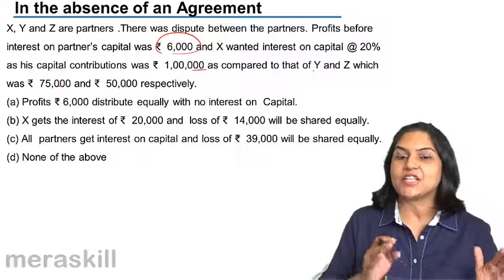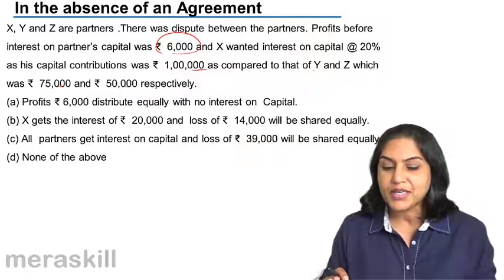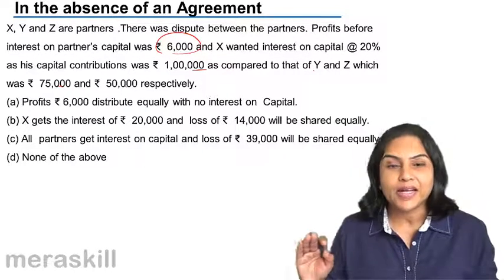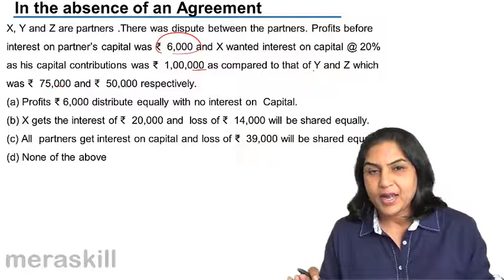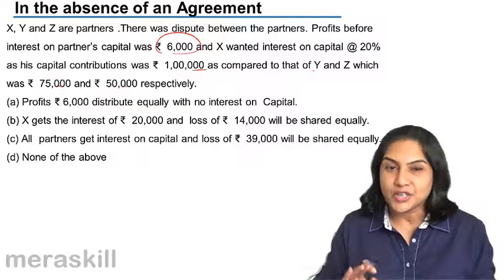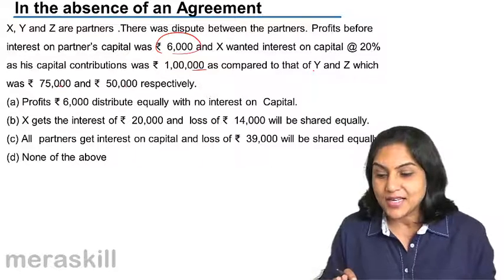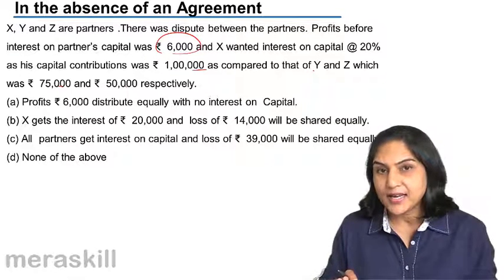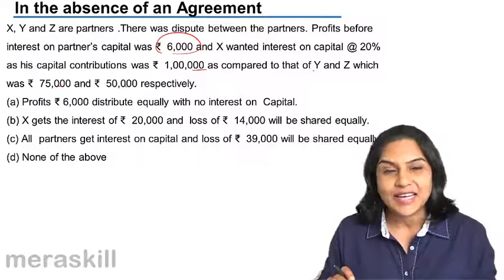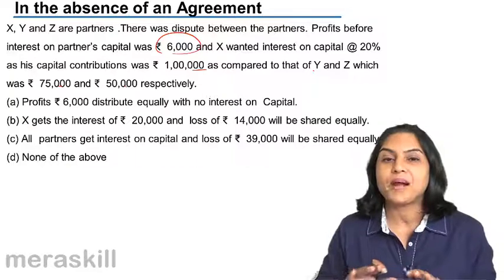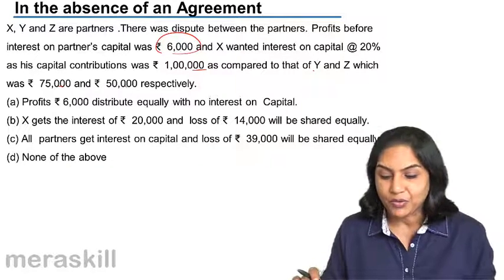What we discussed before was that in the absence of an agreement, no interest on capital is to be paid. In the absence of an agreement, we also discussed that the profit sharing ratio is equal — all partners are given an equal amount.